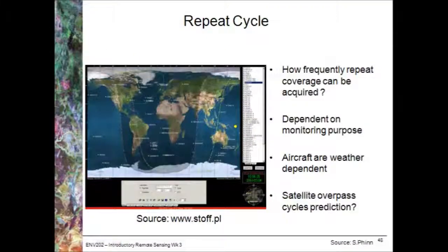We also look at the repeat cycle of satellites. A website application can show you a large number of satellites and determine when a satellite is passing over a location at any particular time — very handy if you want to go into the field on the same day as a satellite overpass. The majority of satellites pass over around 10 o'clock in the morning, because there is statistically lower cloud cover at that time of day. There are a couple of satellites with afternoon overpasses, but most are morning overpass satellites.